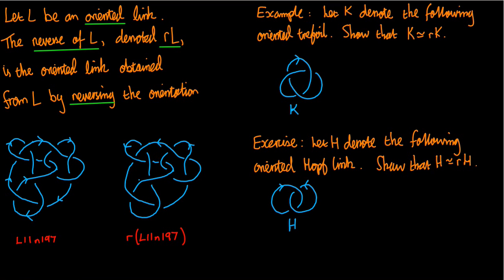And of course there might not be arrows all over the diagram, there might just be one if it was a knot or one per component if it's a link. In this case I'm going to reverse all of them. There we go. So that's L11N197 and that's R of L11N197.